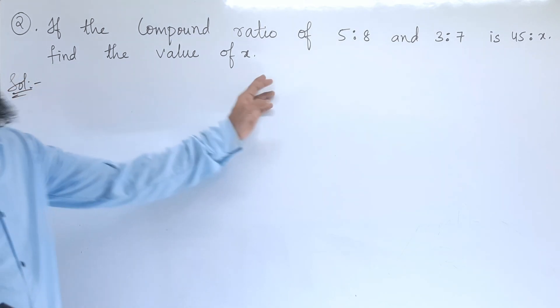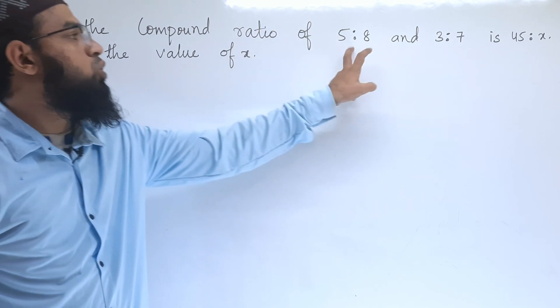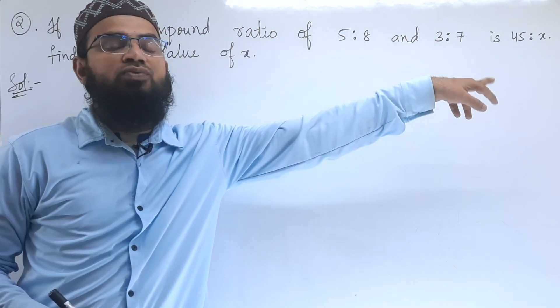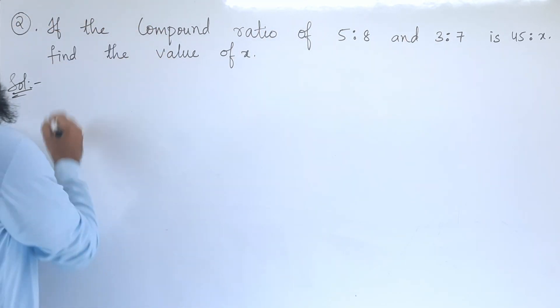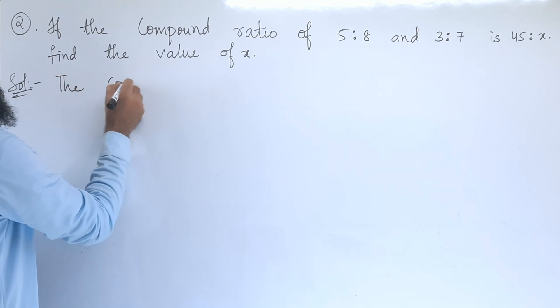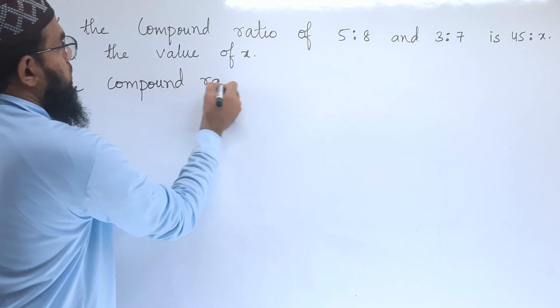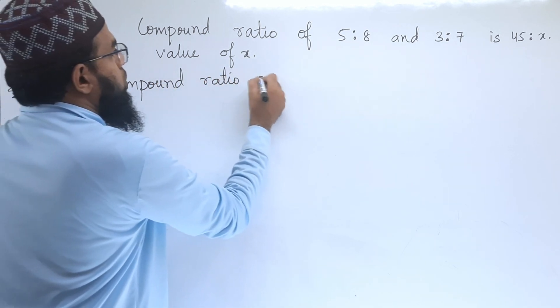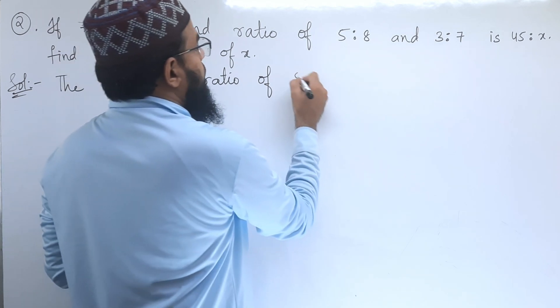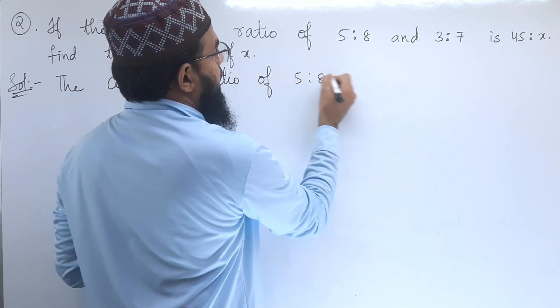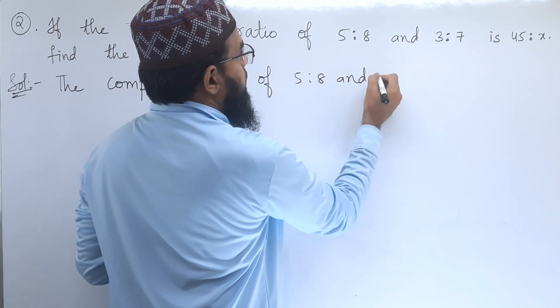We need to find the value of x where the compound ratio of these two is given as 45:x. Let's write the solution: the compound ratio of 5:8 and 3:7 equals 5/8.